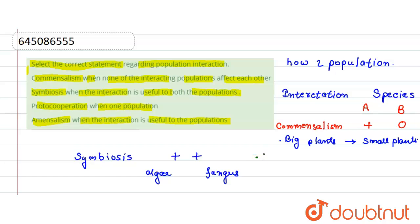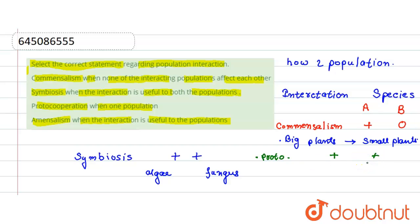Third is proto-cooperation. In proto-cooperation, one species is benefited and the other is also benefited. So proto-cooperation is also a case in which both species are getting benefit.